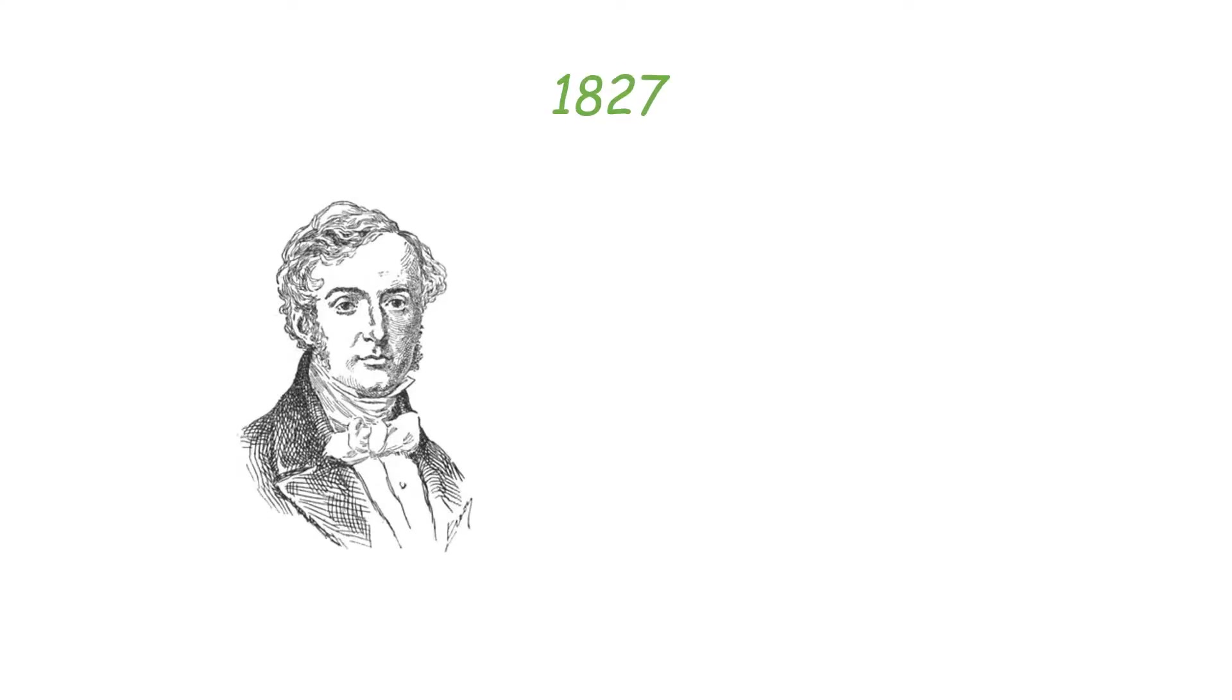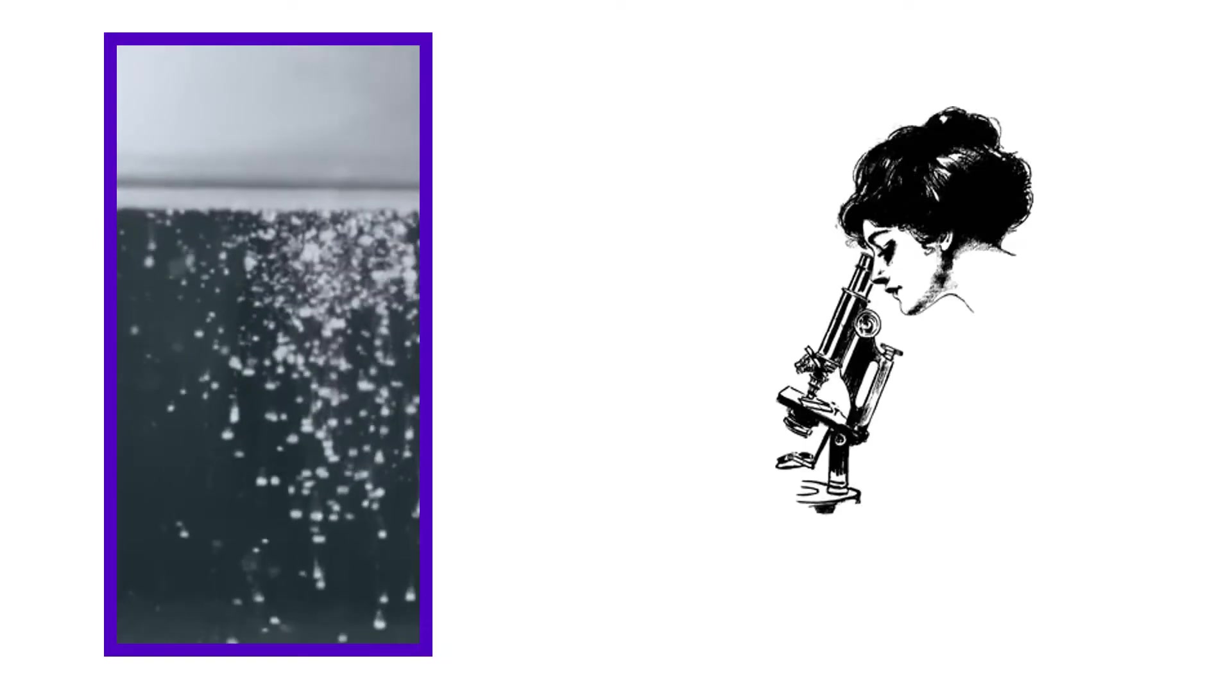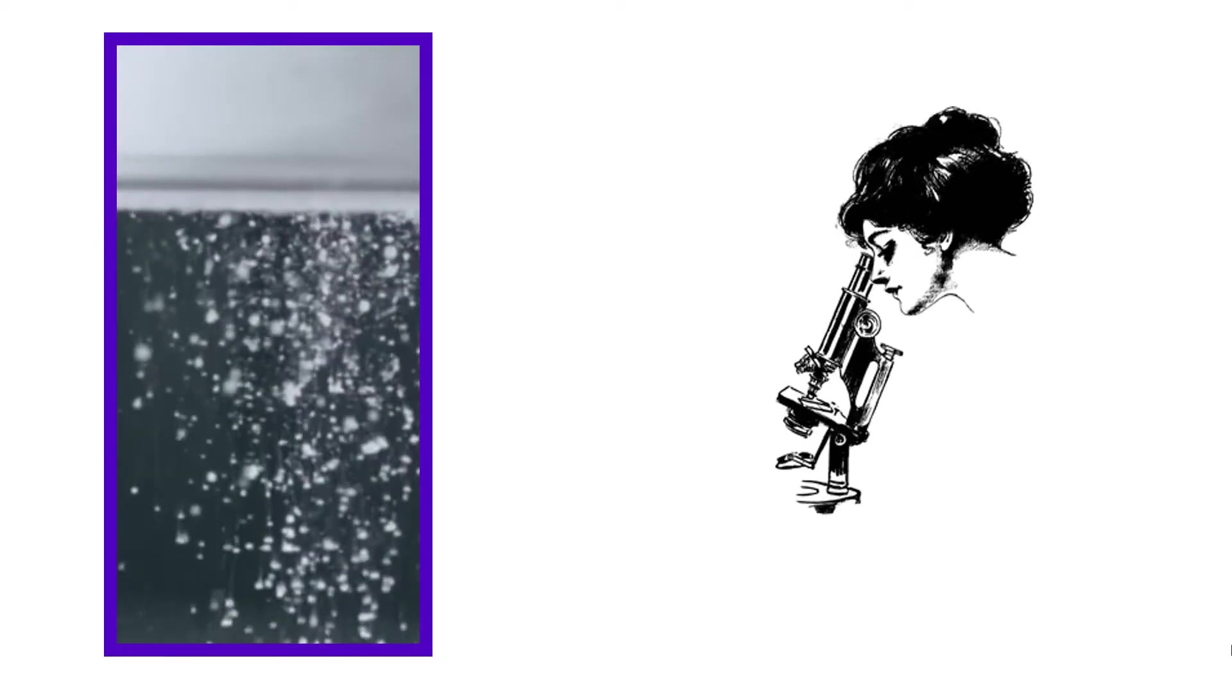The year was 1827. British plant scientist Robert Brown was working with some pollen grains of a plant named Clarkia Puchella. He kept the grains inside water and looked at them under a very high intensity microscope.